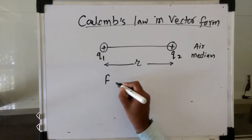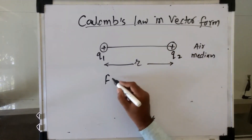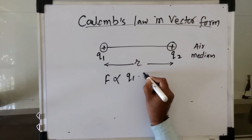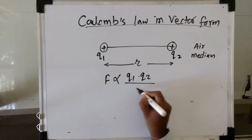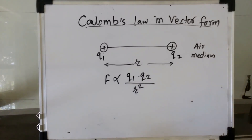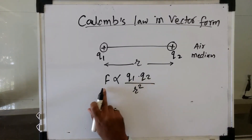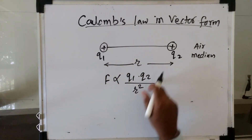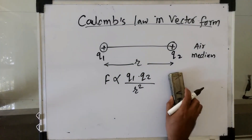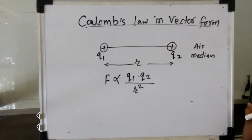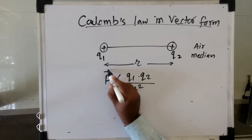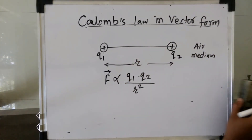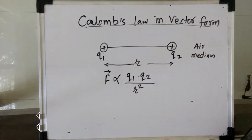That law states that force is directly proportional to the product of the magnitude of the two charges, and it is inversely proportional to the square of the distance between them. We are going to study this Coulomb's law statement in vector form. In the vector form, the force is always a vector quantity — so it will have a magnitude as well as a direction.